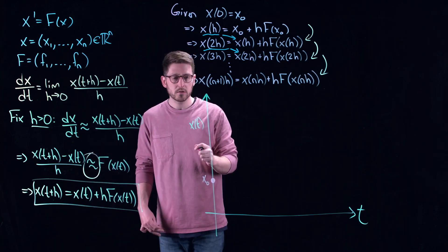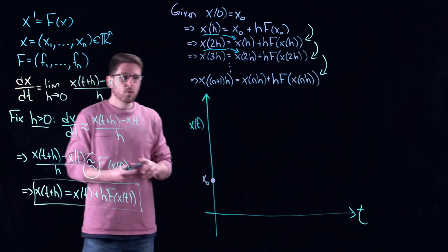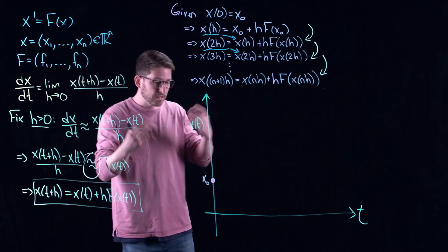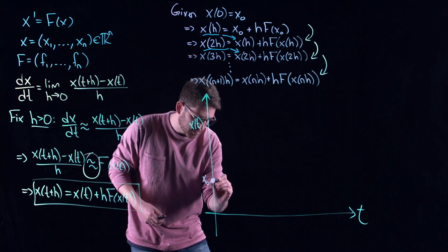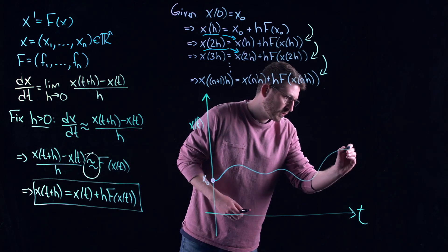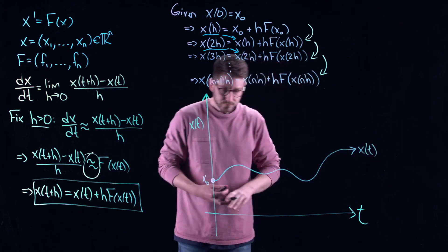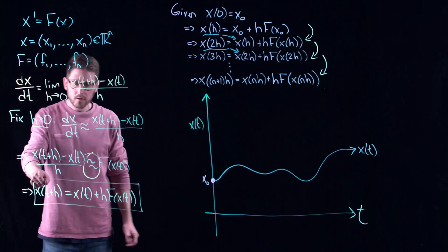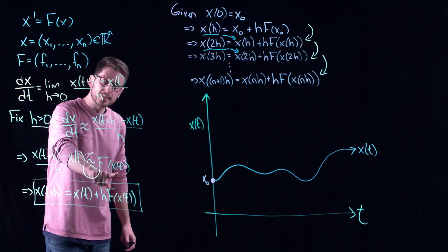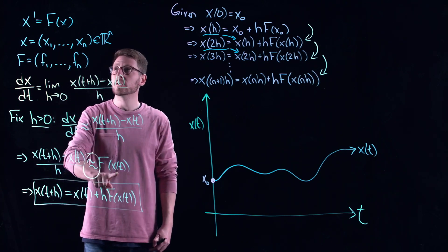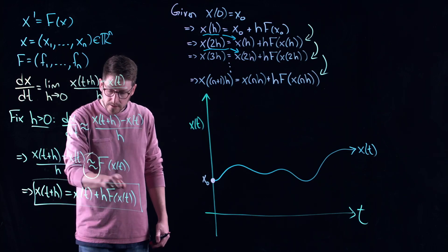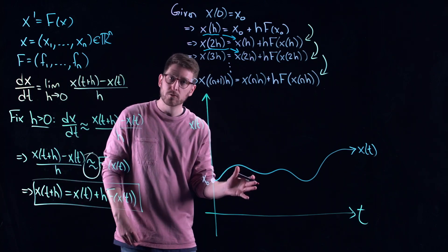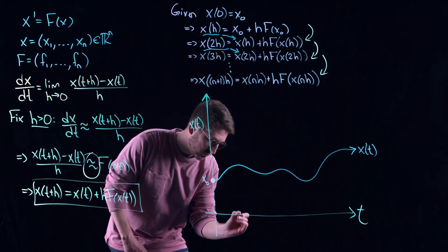This is the trade-off that happens here. Clearly, we want h to be as big as we possibly can get it. But if h is too big, then at every stage here, we're just accumulating too much error, and we might be returning results that have nothing to do with the original equation. Now, there's a really nice way of visualizing how the error actually accumulates in this thing. Imagine this is t, and let's say this is x of t. So let's imagine we start right here at x-naught.